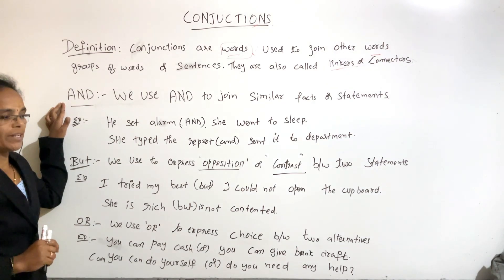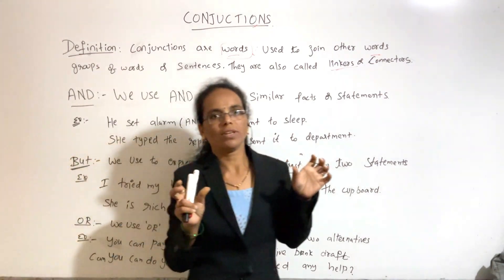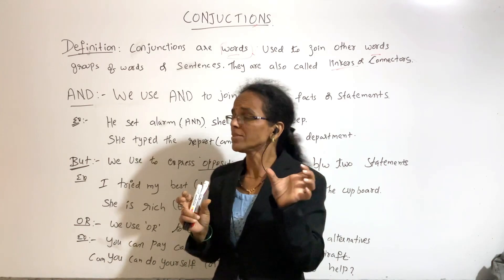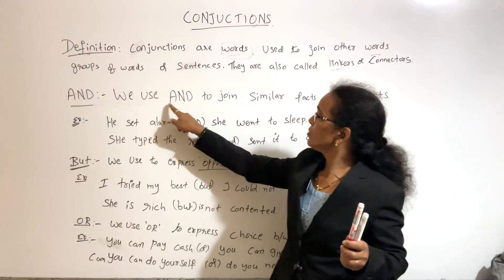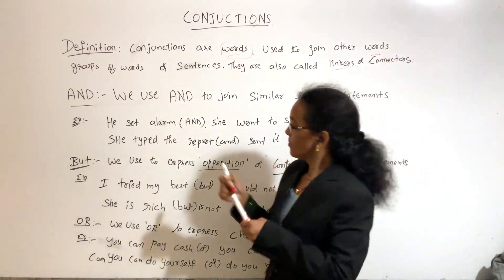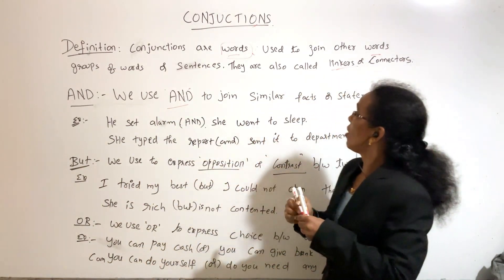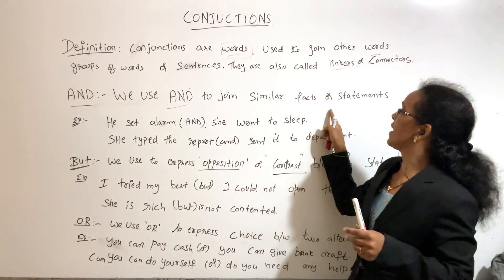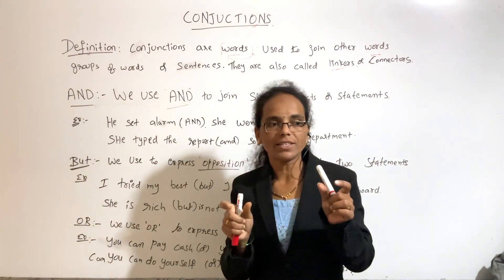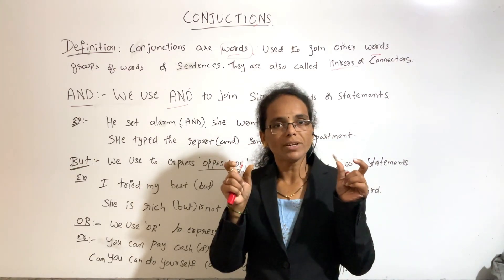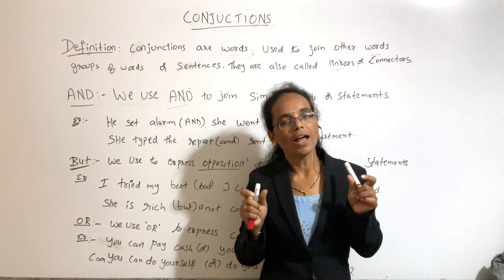Let's look at AND. If you have two positive sentences — positive and positive in the same sense — we use AND. We use AND to join similar facts or similar statements.